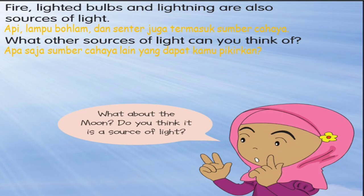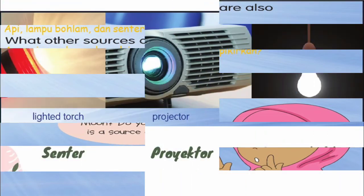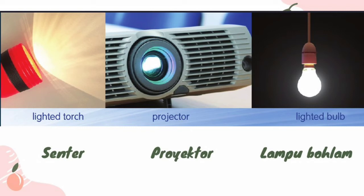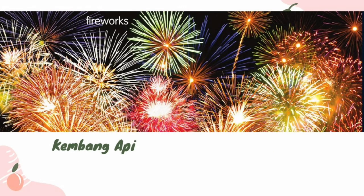What other sources of light can you think of? Apa saja sumber cahaya lain yang dapat kamu pikirkan? What about the moon — do you think it's a source of light? Apa yang kamu pikirkan tentang bulan, apakah bulan juga sumber cahaya? Next: light torch atau senter, projector atau proyektor, light bulb atau lampu bohlam. And fireworks atau kembang api.